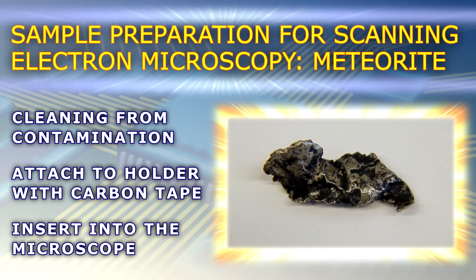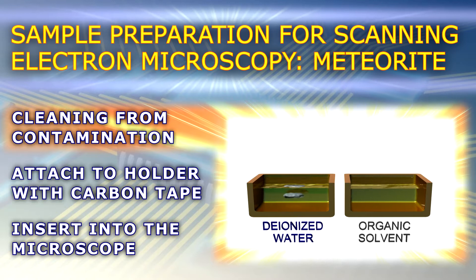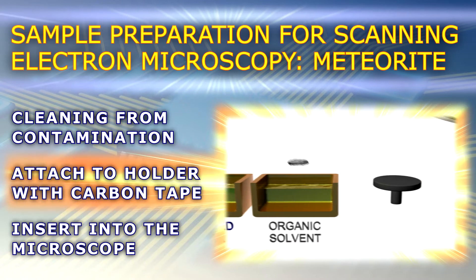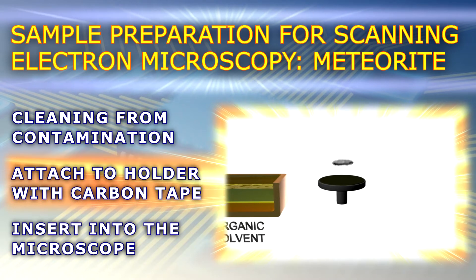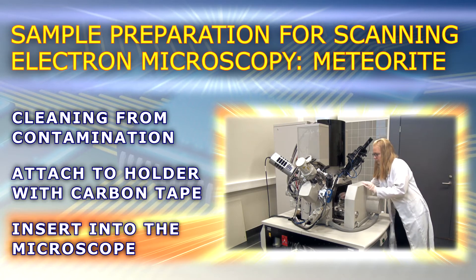So, let's get started! The meteorite has a metallic appearance and therefore it should be safe to clean it from contamination with ionized water and organic solvents. Finally, the sample is attached to a mushroom-shaped holder with carbon tape and inserted into the microscope.